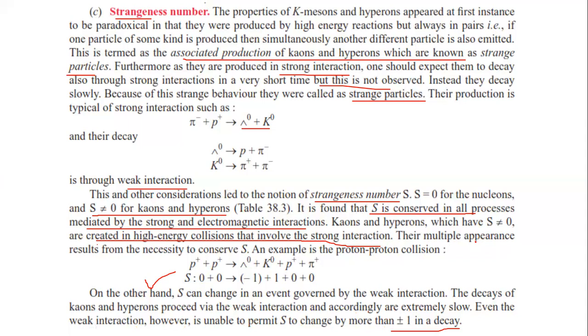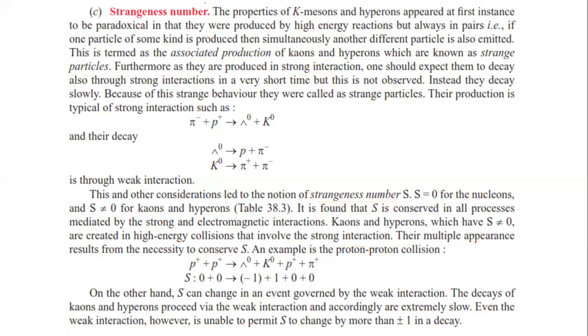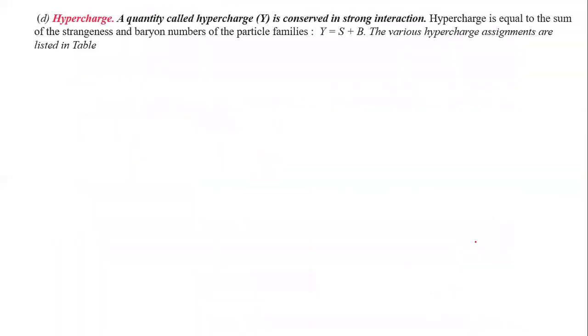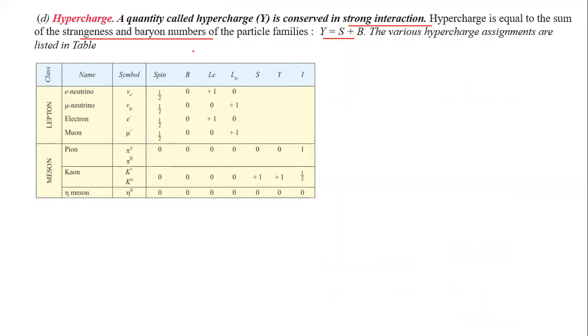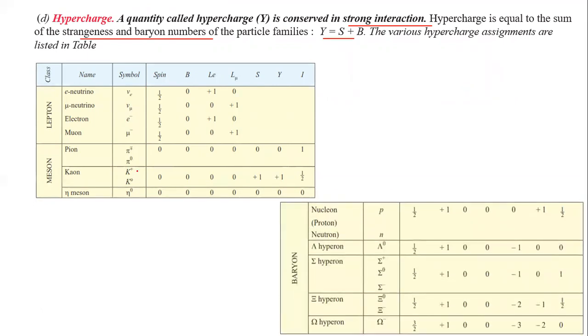So the quantum numbers we have are: spin, charge, Baryon number, Lepton number, and strangeness number. A quantity called hypercharge Y is conserved in strong interactions. Hypercharge is equal to the sum of strangeness and Baryon number: Y equals S plus B. You can verify this using the table of leptons, mesons, and baryons.